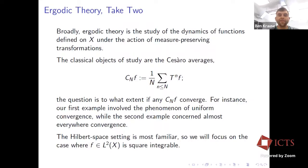Broadly, I consider ergodic theory to be the study of the dynamics of a function defined on a probability space under the action of measure-preserving transformations. The classical objects are the Cesàro averages, and the question is the extent to which we can make sense of limiting values. For the rest of this talk I'm going to focus on the Hilbert space setting — you can think about every function as being square-integrable until I say otherwise.